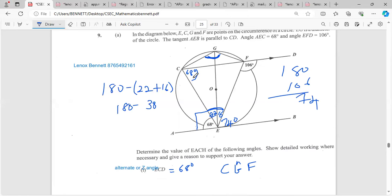I'm thinking if I get the 22 plus this, it would equal 180 minus - take this from 180 because this is a cyclic quadrilateral. This angle plus this angle should give you 180 degrees. So we have 180 minus 22 plus 16, which gives us 38. So that angle is 180 minus 38, which is 142. CGF is equal to 142 degrees, and the reason: opposite angles in a cyclic quadrilateral.